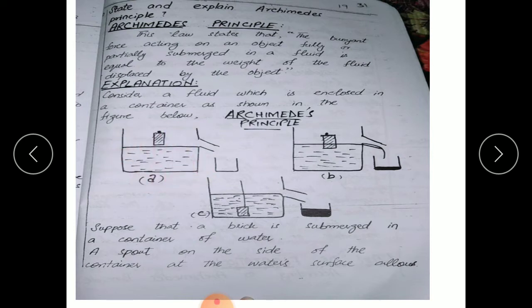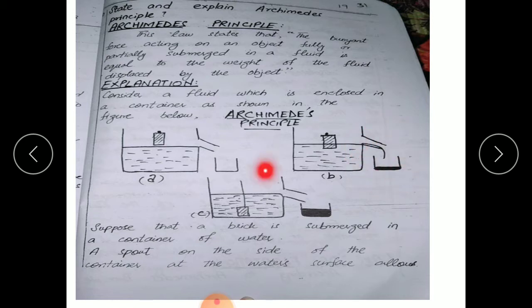For example, consider a fluid and an object — for example, a brick. When the brick is out from the fluid and you are going to submerge it in the liquid, you can see the fluid is displaced into the other smaller container. When the brick is fully submerged in the liquid, we can get in the smaller beaker the displaced water which is displaced by this brick.